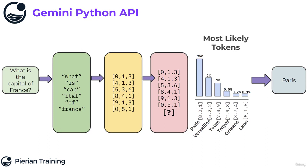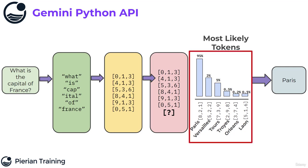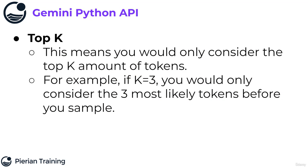Thinking back to our discussion of the probability of tokens, note that we have probabilities for a variety of tokens. So how can we use that in terms of top P and top K? Beginning with top K: top K means you would only consider the top K — an integer of your choosing — amount of tokens. For example, if K is equal to 3, you would only consider the three most likely tokens before you actually conduct your sampling.